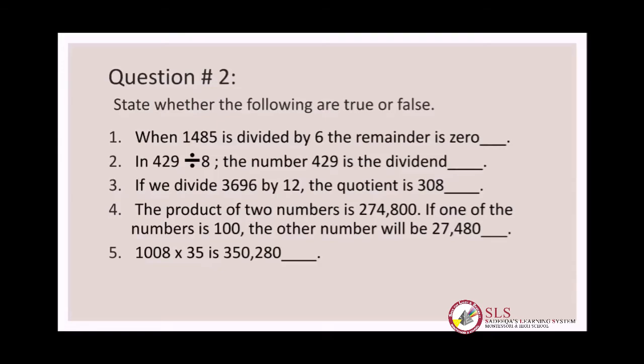The second one: in four hundred and twenty-nine divided by eight, the number four hundred and twenty-nine is the dividend. Four hundred and twenty-nine is bigger than eight, which means four hundred and twenty-nine is the dividend — and that is correct.